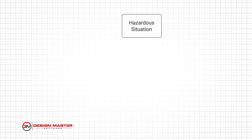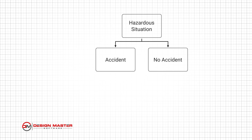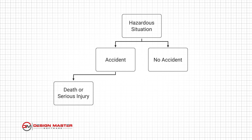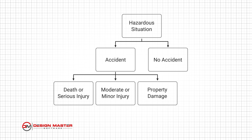Annex E talks about when those signal words are used, and they actually have two different flowcharts for choosing the signal word for your situation. The first criteria is whether you actually have an accident situation or not — if you don't, you would not include a signal word. For an accident, the question is what actually happens: is it death or serious injury, a moderate or mild injury, or simply property damage? Property damage always gets a notice label. For injury to people, a minor or moderate injury gets the caution label.